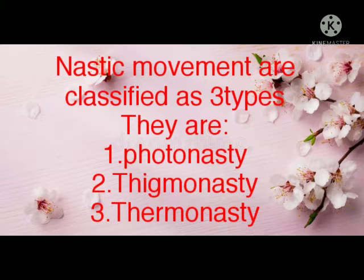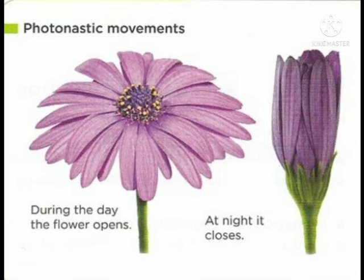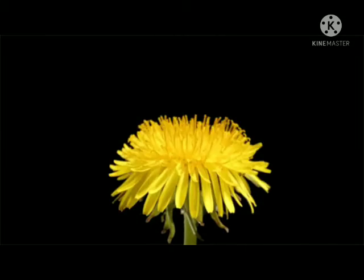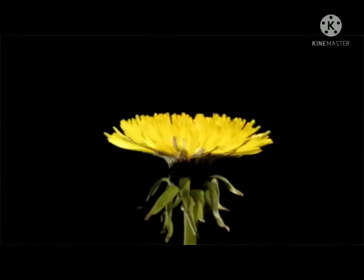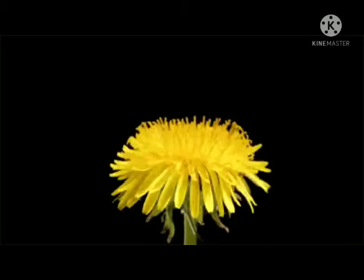They are Photo Nasty, Thigmo Nasty, and Thermo Nasty. First, we will know about what is Photo Nasty. Photo Nasty is the movement of a part of a plant in response to light. An example of Photo Nasty is Taraxacum officinale, which blooms in the morning and closes in the evening.